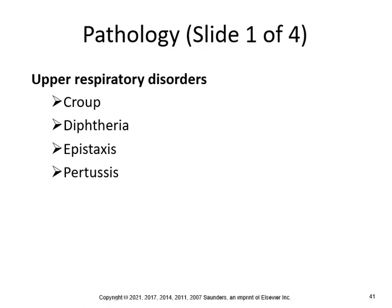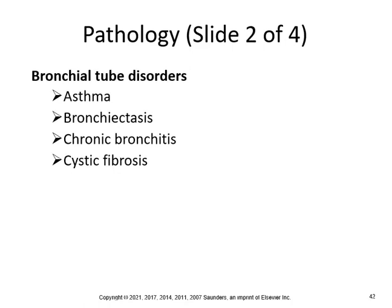Upper respiratory disorders: croup, diphtheria, epiglottitis, epistaxis, and pertussis. Bronchial tube disorders: asthma, bronchiectasis, chronic bronchitis, and cystic fibrosis.